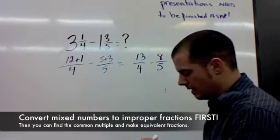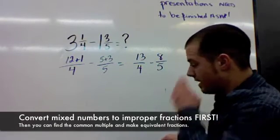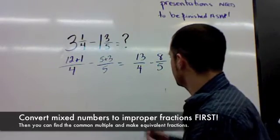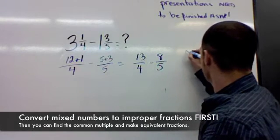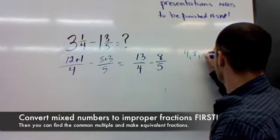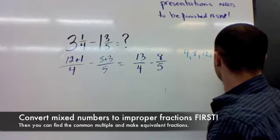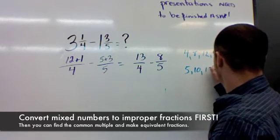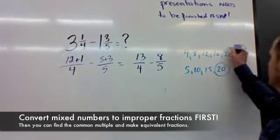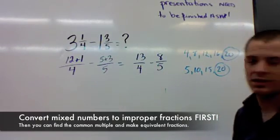Now that we've done that, once we've converted, what we have to do is change these into equivalent fractions. So it's the same thing with the 4s: 4, 8, 12, 16, 20. And then 5, 10, 15, 20. Obviously, 20 is our common denominator.